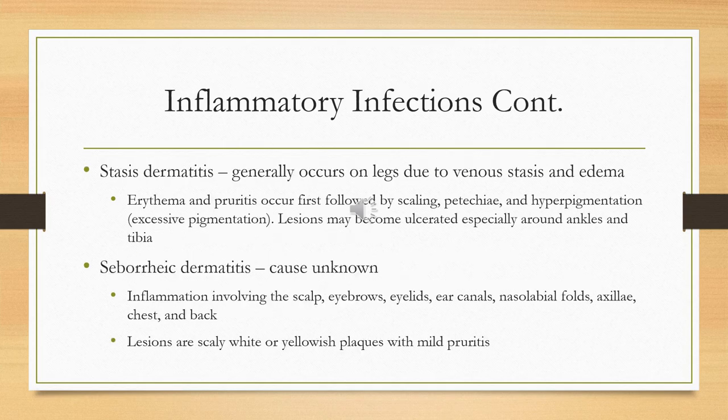Two other types are stasis dermatitis and seborrheic dermatitis. Stasis dermatitis occurs in the legs due to venous stasis — meaning the blood is not moving in the extremity. The blood pools in the legs and doesn't return to the heart, which is why you get edema, and that can cause stasis dermatitis.